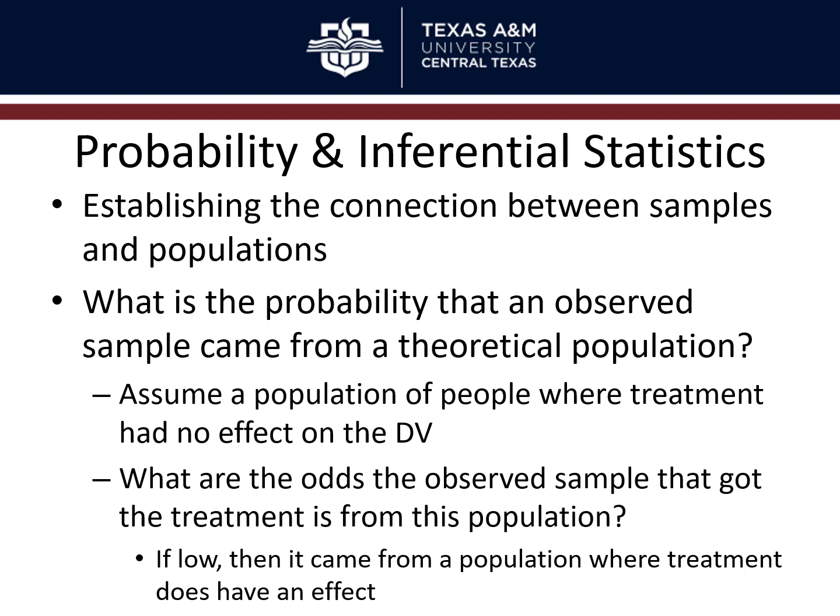It's a roundabout logical circle, but that's how it works. You have to assume the null — where the treatment doesn't work — and say: we got these people, here's this measure, and if the treatment really didn't work, what are the odds we'd get a finding this big? It'd be really rare. Therefore, we're going to reject the null. So how rare does it have to be, and how do we define that? That's where the application of probability comes in, and we'll be talking about the foundational building blocks of that logic in this lecture.